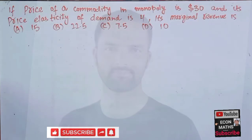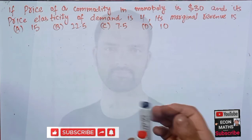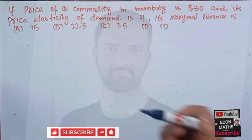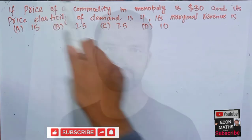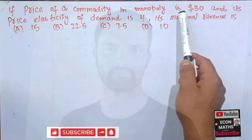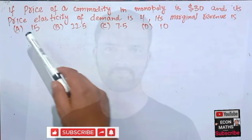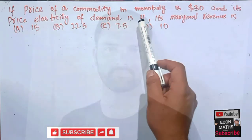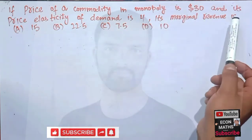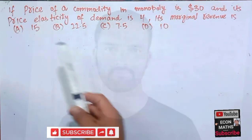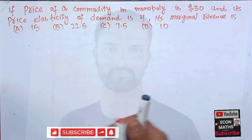In this video we will solve another problem on finding the marginal revenue from price elasticity of demand and price of a commodity in case of monopoly. The question is: a price of a commodity in monopoly is $30 and its price elasticity of demand is 4, its marginal revenue is? We have to find the marginal revenue. The options are 15, 22.5, 7.5, or 10. What is the relationship between the marginal revenue and price in case of monopoly?